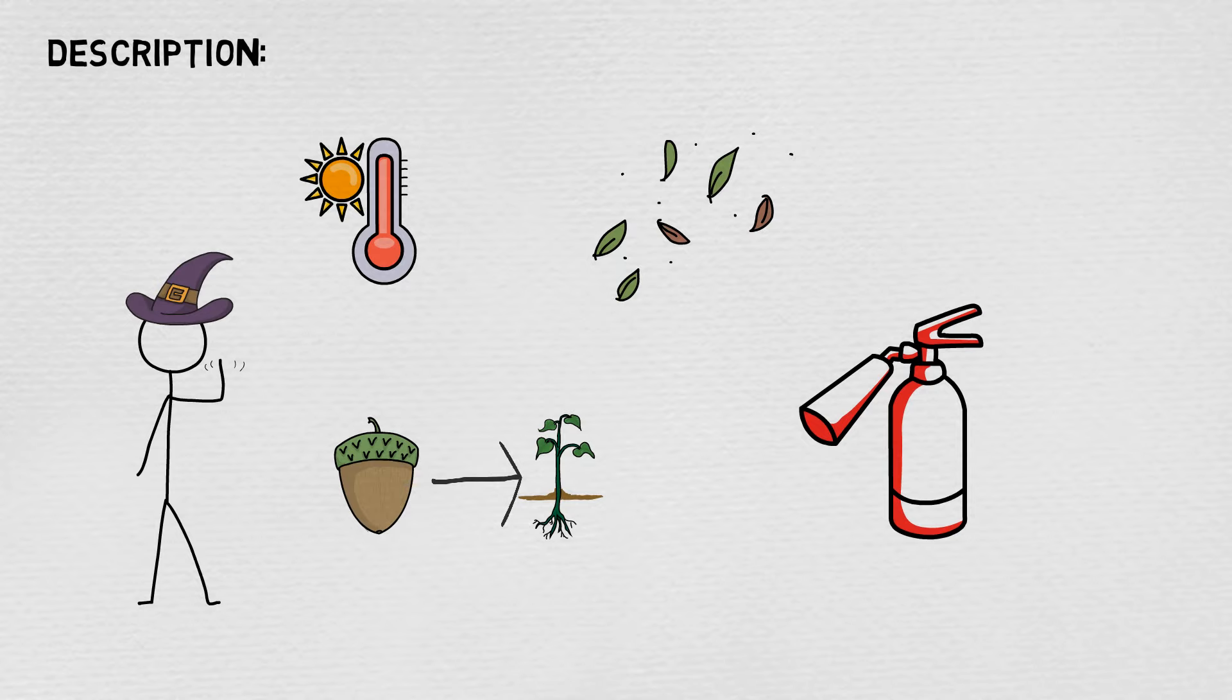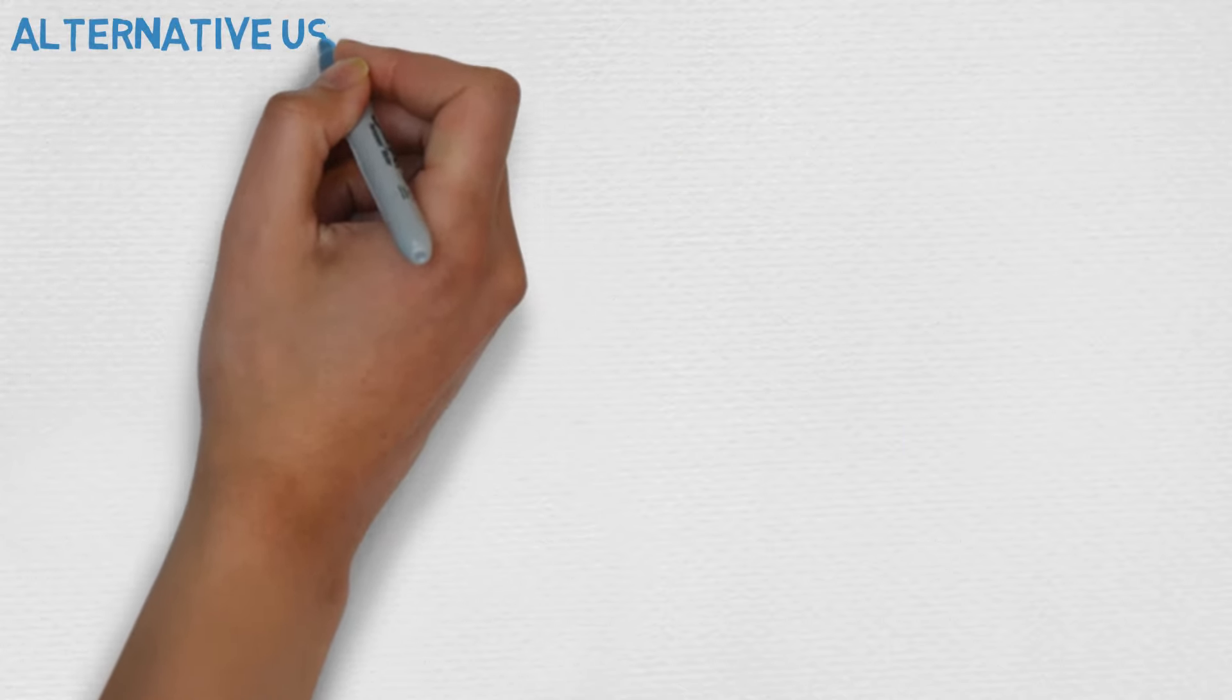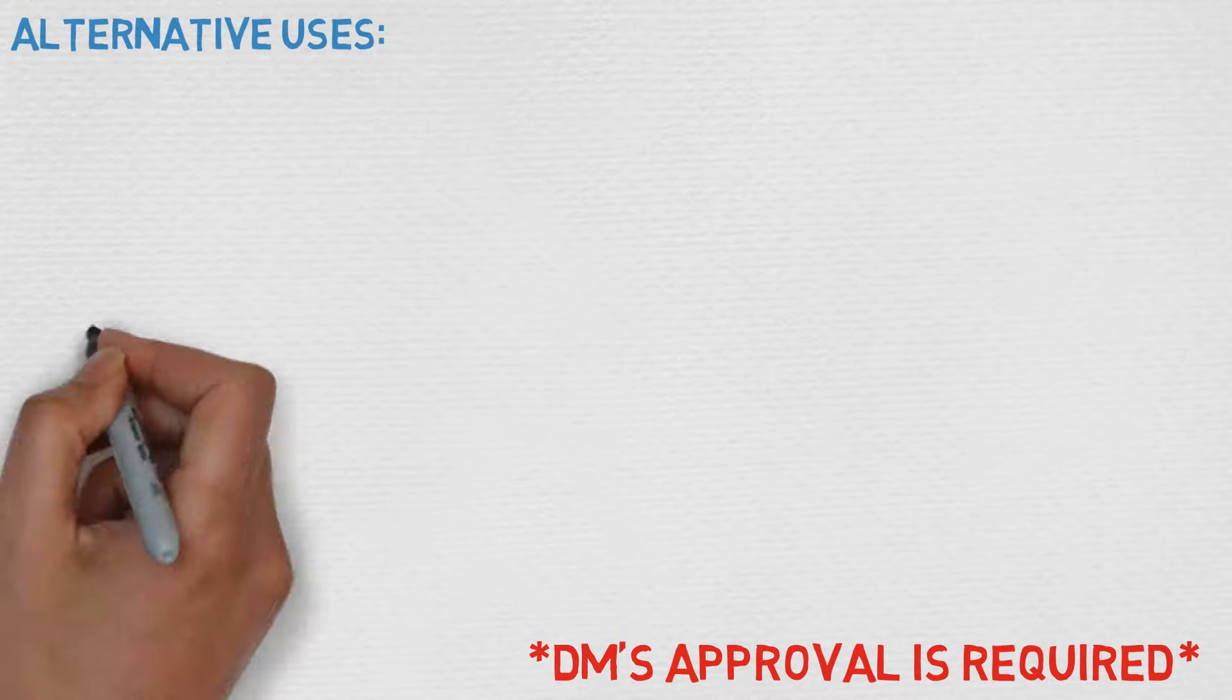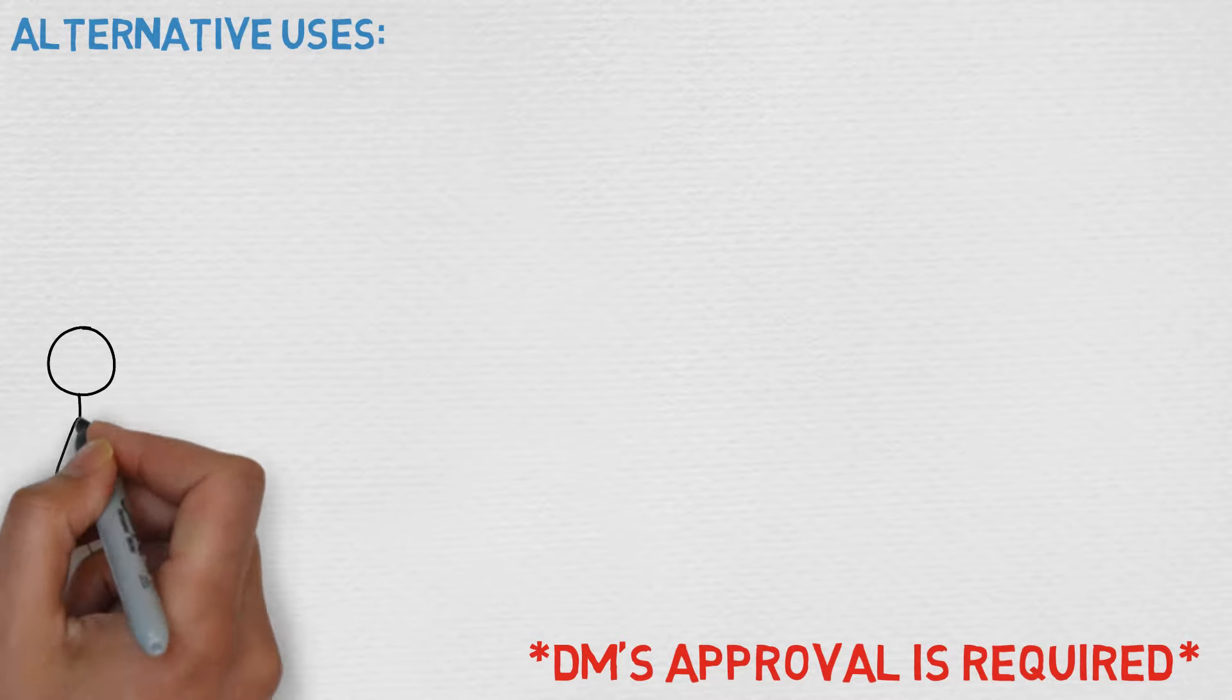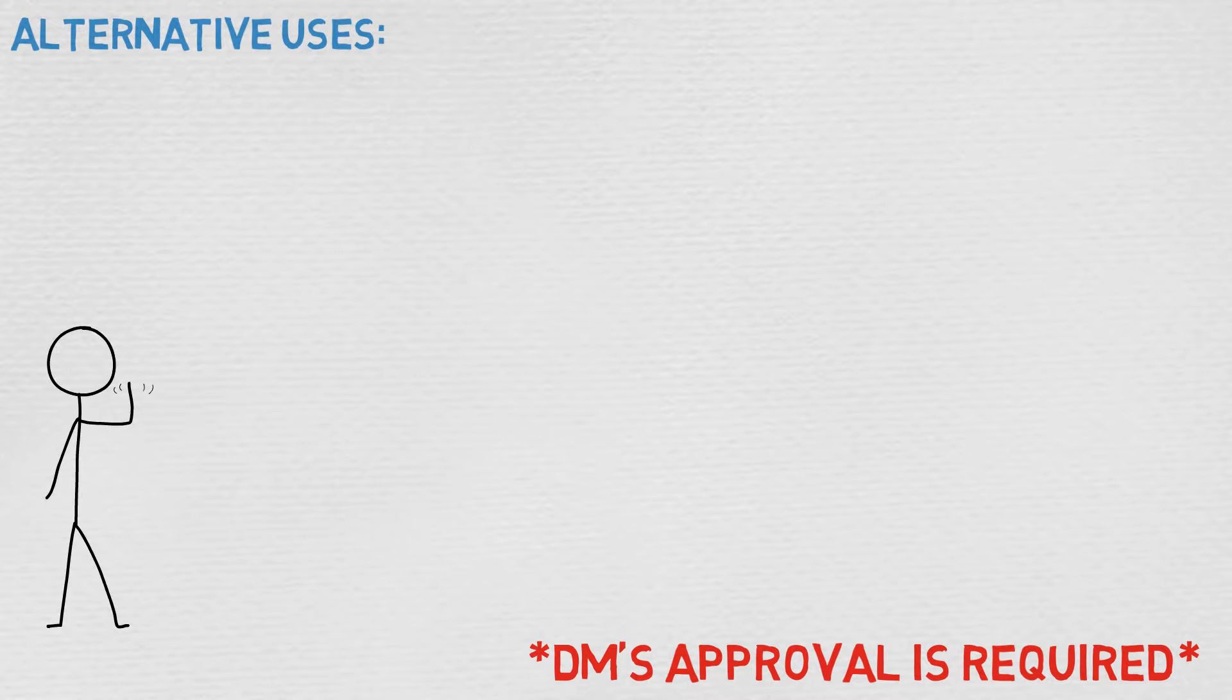In addition to that, it's kind of the druid version of prestidigitation. That being said, let's get into some alternative uses here. Immediately what comes to my mind is making fruit ripen so that your party can eat it consequence-free. I think this would be a great use of it.